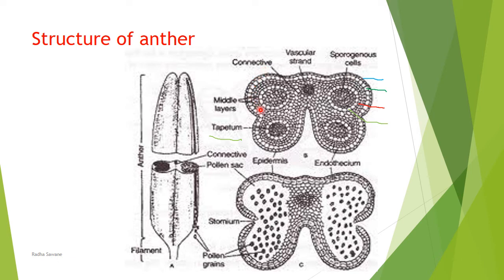Inner to epidermis, one more single-layered common wall layer is present — this is the endothecium. Its cells are larger in size than epidermis cells and are differentiated by the presence of callose thickenings on the cell wall. This endothecium layer is important because it helps in dehiscence of the anther.